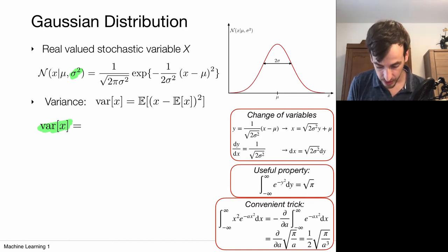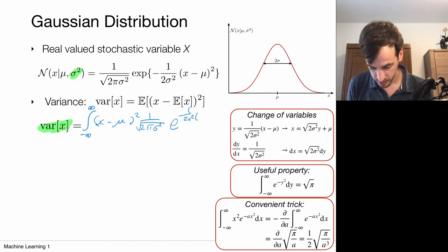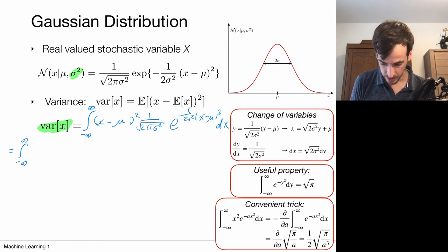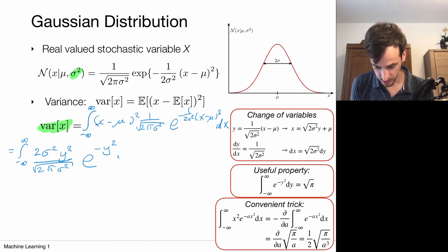Let's compute this. We're computing the expected value: from minus infinity to infinity we integrate x minus its mean, squared, weighted with the Gaussian distribution. Again, we'll simplify this integral with the same change of variables. After substitution, x minus mu squared becomes 2 sigma squared times y squared, and we have this front factor. The exponential becomes e to the power minus y squared, and the integration measure has the factor square root of 2 sigma squared dy in it.